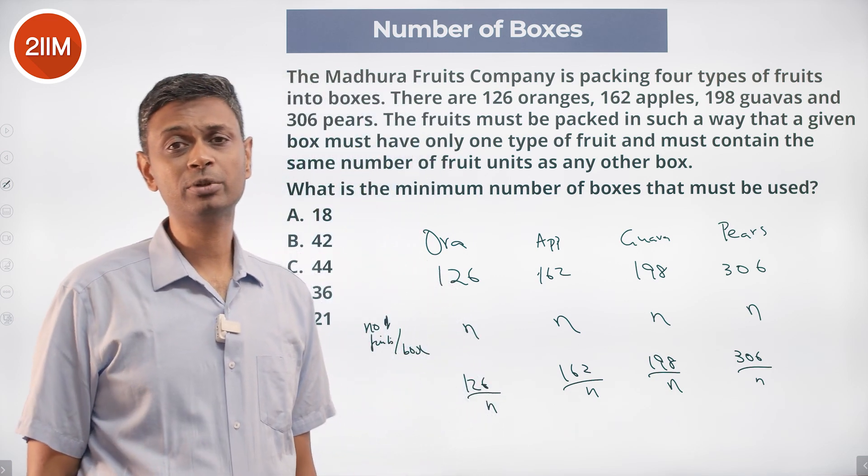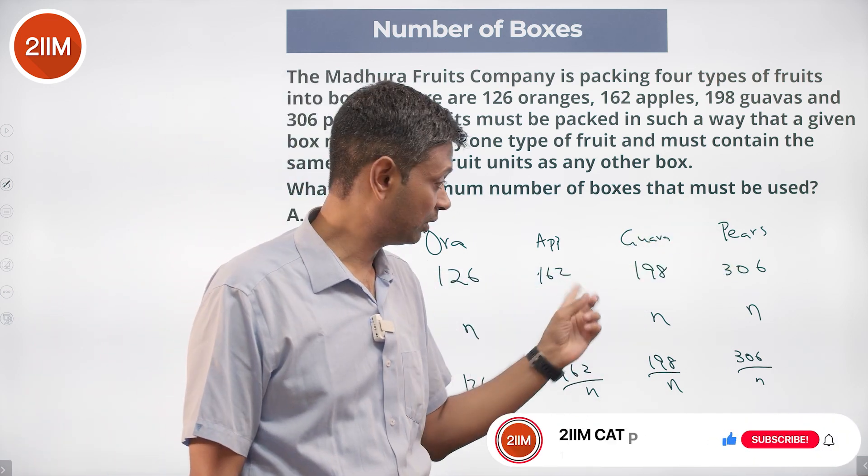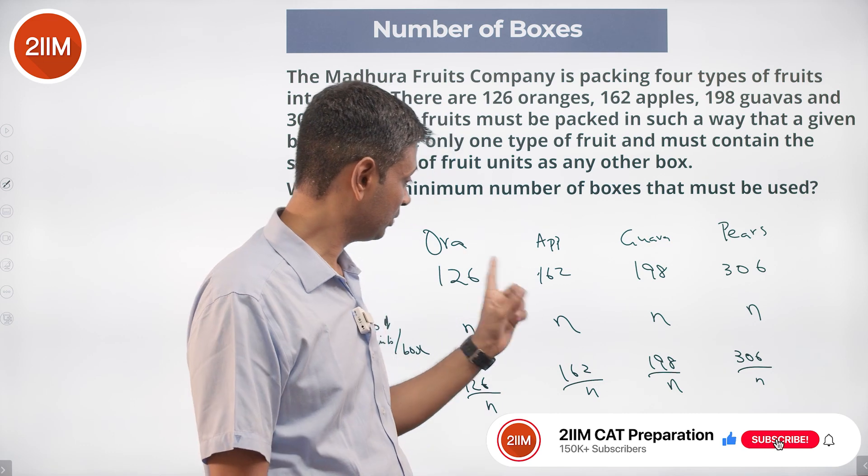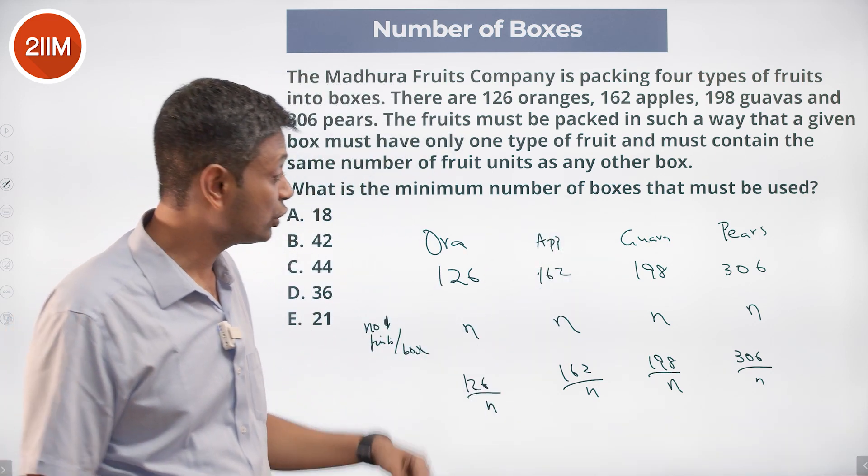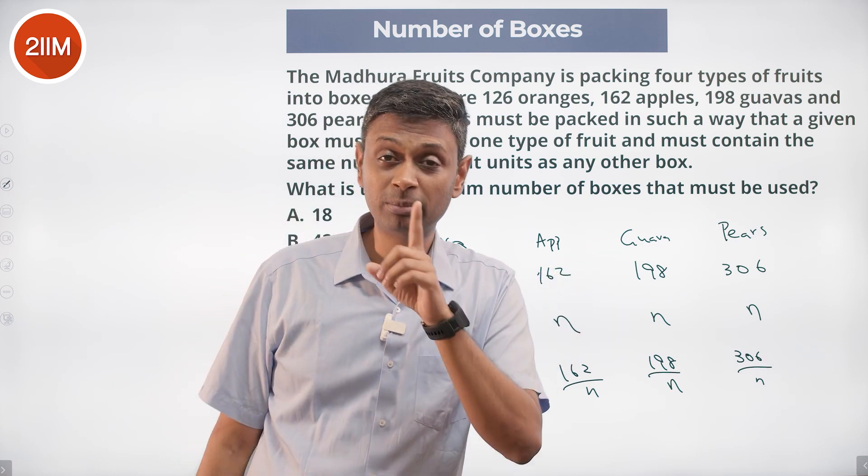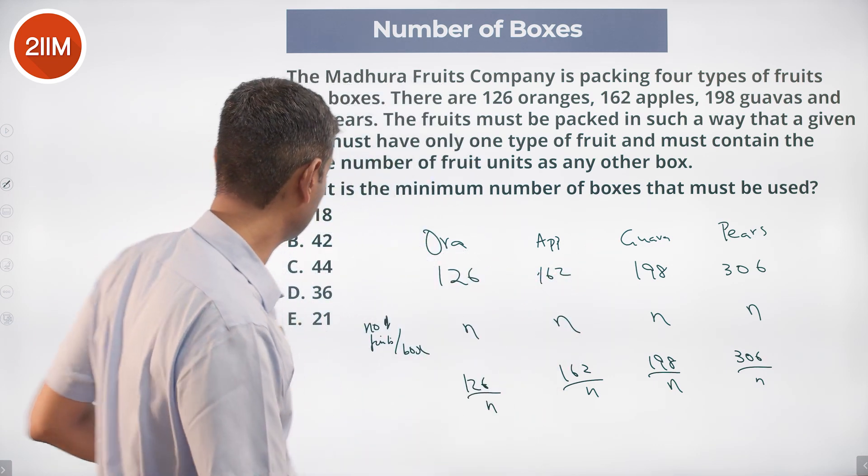They are all multiples of 9. 3 plus 6 is 9, 1 plus 9 plus 8 is 18, 162 adds up to 9, 126 adds up to 9. Each of these numbers are multiples of 9, each are multiples of 2, so each of them is a multiple of 18.